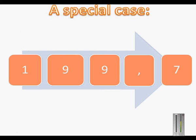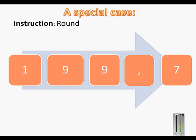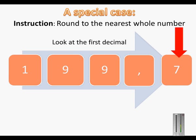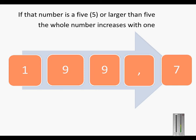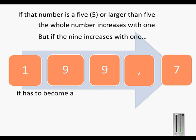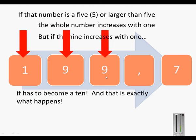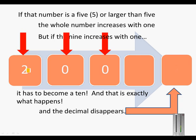This is a very special case: 199.7. The instruction is round to the nearest whole number. You look at the first decimal, which is a seven. Because this number is larger than five, the whole number will increase with one. But if nine increases with one it becomes a ten — and that is exactly what happens. The nine turns into a ten, which turns that nine into a ten, which turns that into a two. So 199.7 rounds to 200.